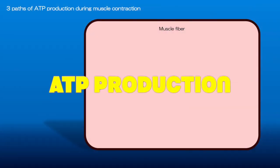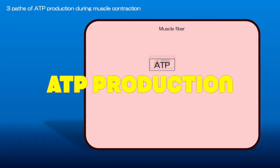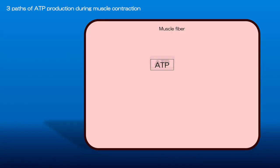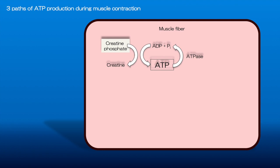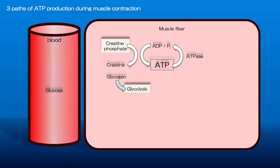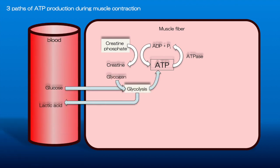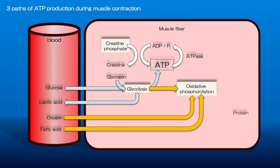Three ways muscle fiber can form ATP. First, the phosphorylation of ADP by creatine phosphate. Second, the phosphorylation of ADP by the glycolytic pathway in the cytosol. And third, the oxidative phosphorylation of ADP in the mitochondria that produces ATP.